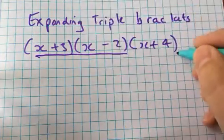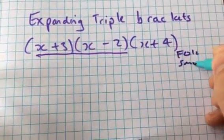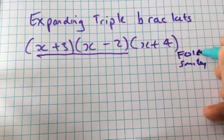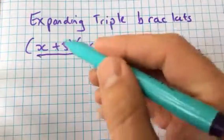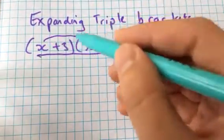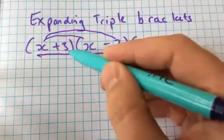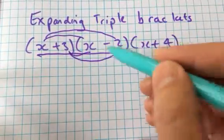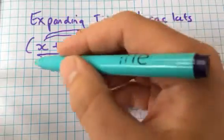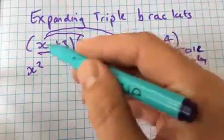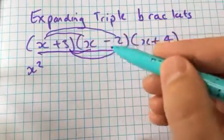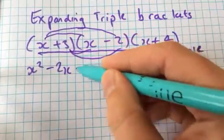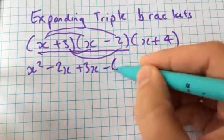And I do the FOIL or the smiley method. We just make sure that every term in the first bracket is multiplied by every term in the second. So I'm just drawing the links there to show which term is going with which. Make sure you end up with four terms.